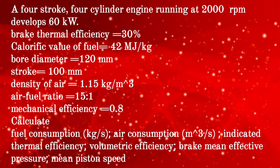Given question: a 4-stroke, 4-cylinder engine running at 2000 rpm develops 60 kW. Brake thermal efficiency is 30%, calorific value of fuel is 42 MJ per kg, bore diameter 120 mm, stroke 100 mm, density of air 1.15 kg per m³, air-fuel ratio 15:1, and mechanical efficiency 0.8.